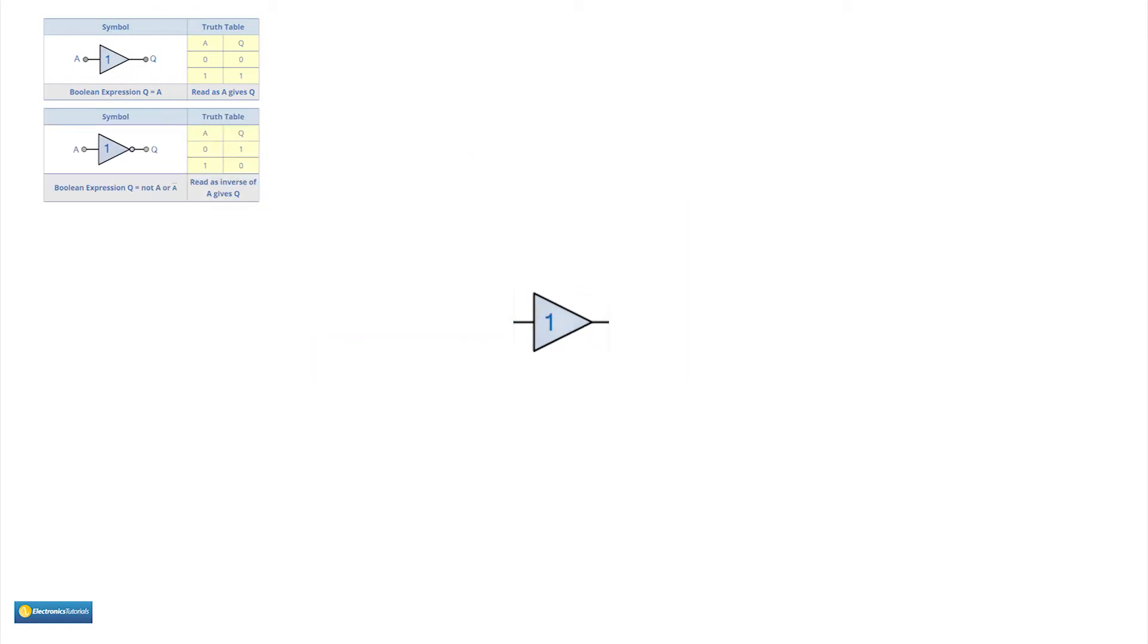You could make a buffer by connecting two inverters in serial like this. Plotting the inputs and outputs into a truth table shows that this configuration is the same as the buffer. This completes single input devices.